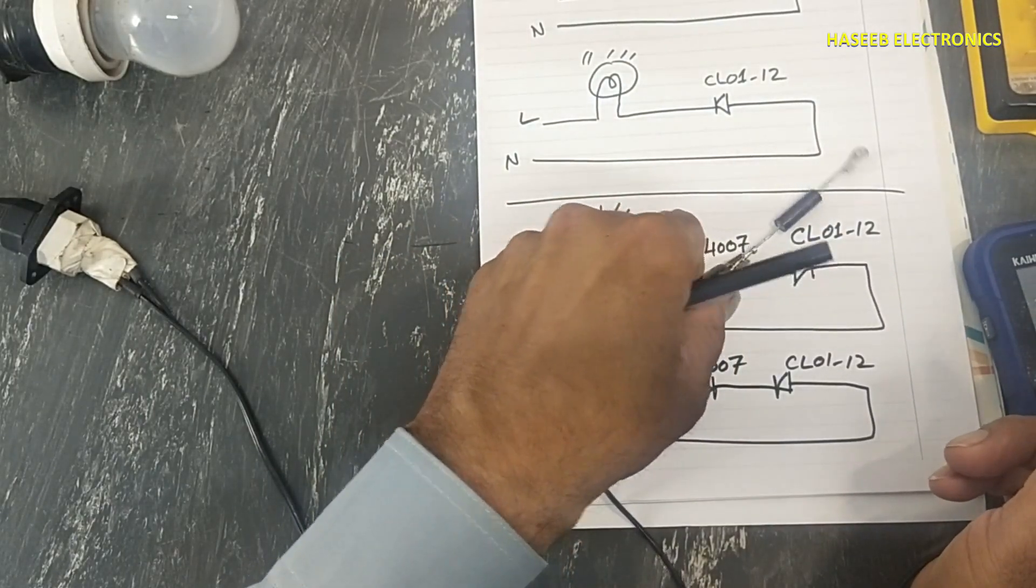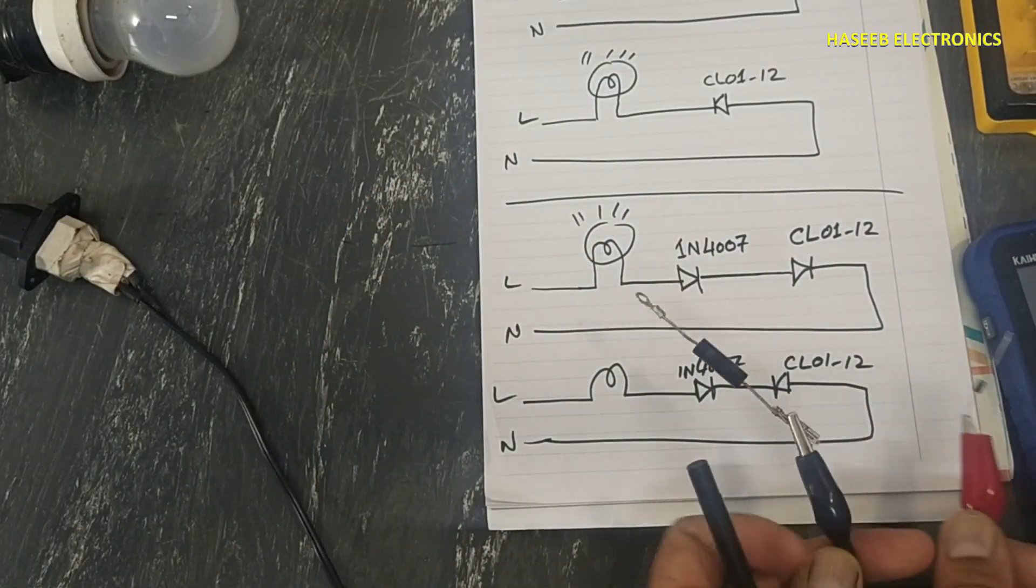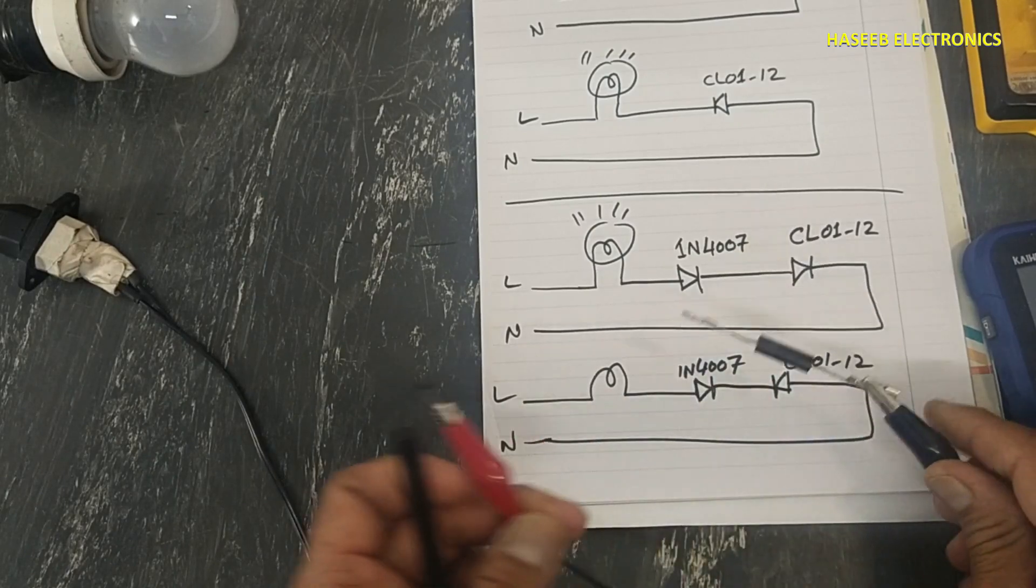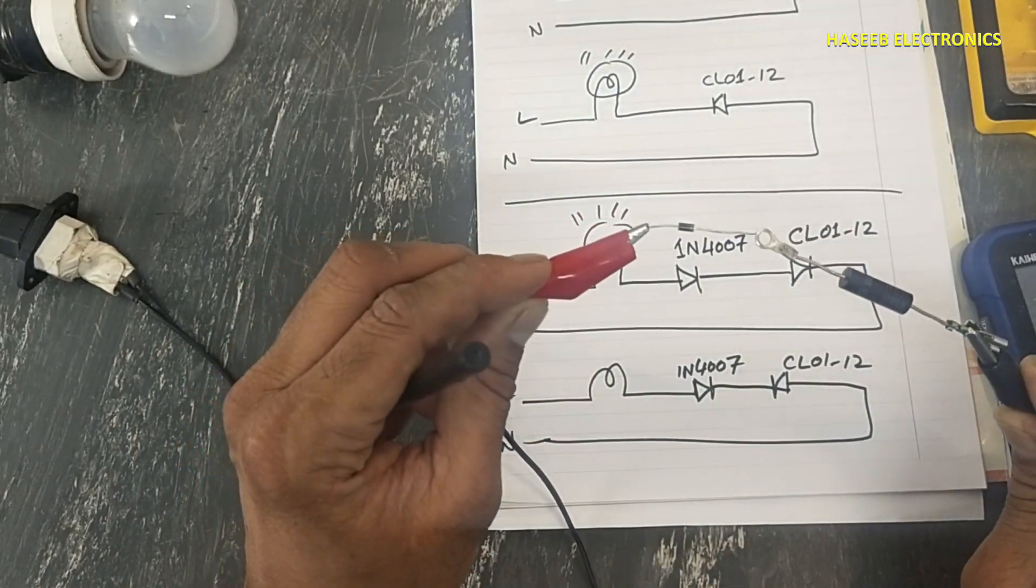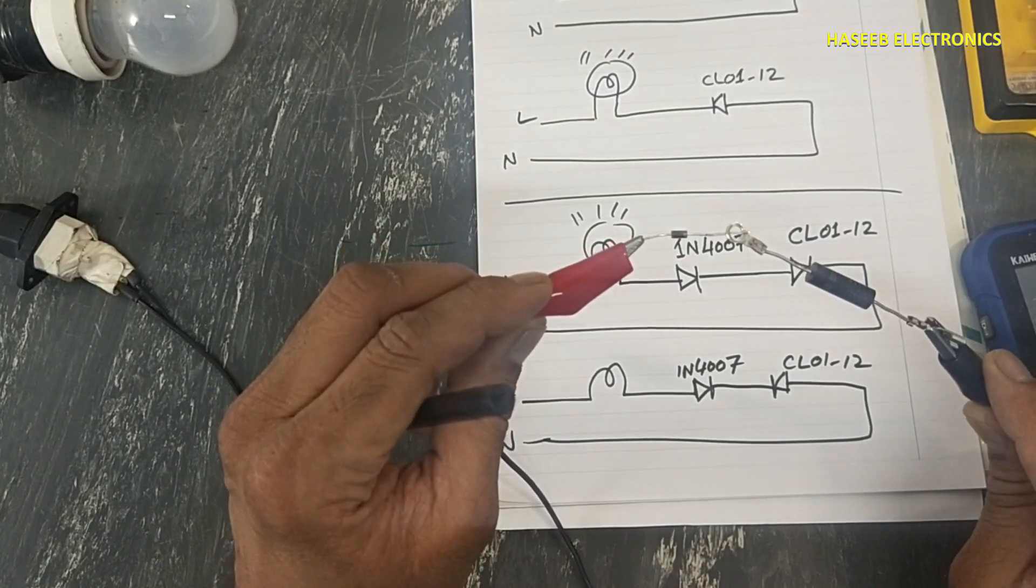And if you connect this neutral side here and this open-ended cathode, so this time both cathodes are connected together.